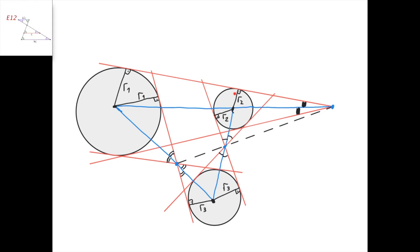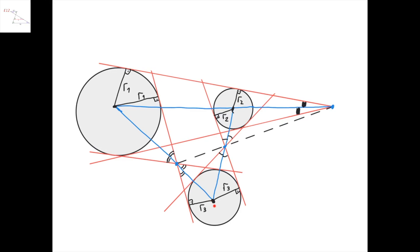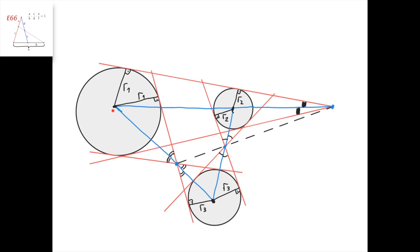We can use the intercept theorem for this segment parallel to this segment and get that R1 divided by R2 equals this divided by this. Similarly, the intercept theorem gives R2 divided by R3 equals this divided by this. And the intercept theorem also gives R1 divided by R3 equals this divided by this. So this divided by this, which is R1 divided by R2, times this divided by this, which is R2 divided by R3, times this divided by this, which is R3 divided by R1, equals 1 — since R1, R2, and R3 all cancel out. Therefore, by Menelaus' theorem, we get the desired result.